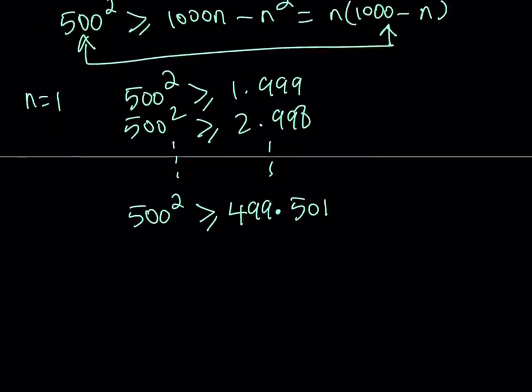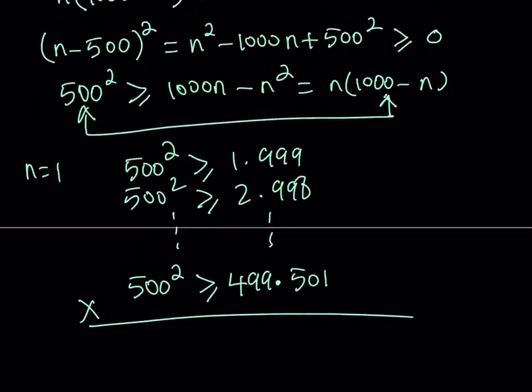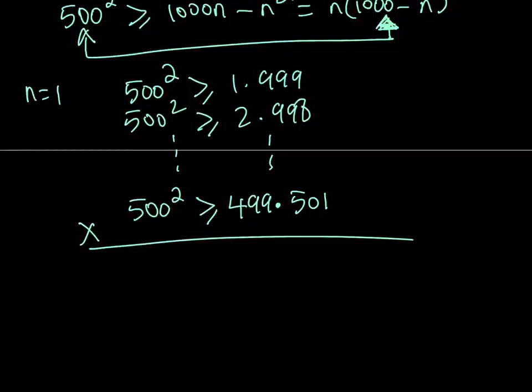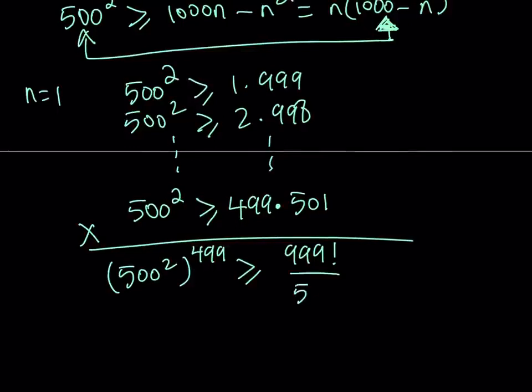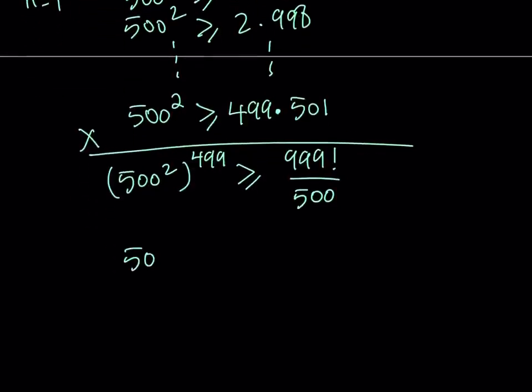Now I'm going to do something we do a lot: multiply these together. When I multiply, my goal is this: I was able to compare 500 squared to something like this, and I kept doing it. On the right-hand side of my inequality, I'm going to get something like 999 factorial. On the left-hand side, I have 499 rows, so 500 squared is repeated 499 times. On the right-hand side, I have 999 factorial, but I'm missing 500, so I just need to divide by 500.